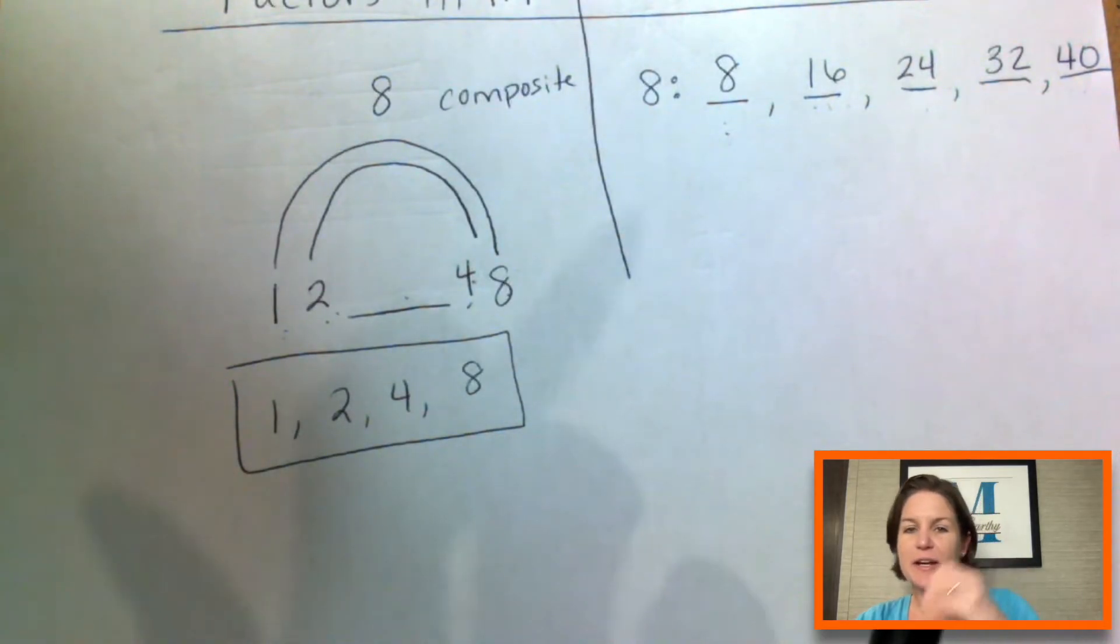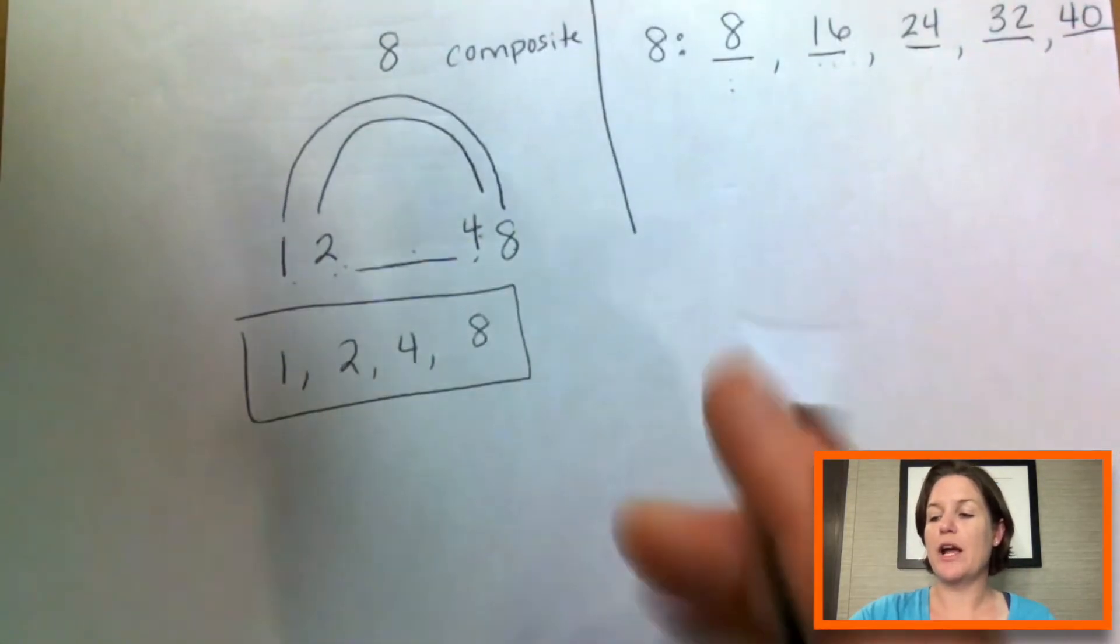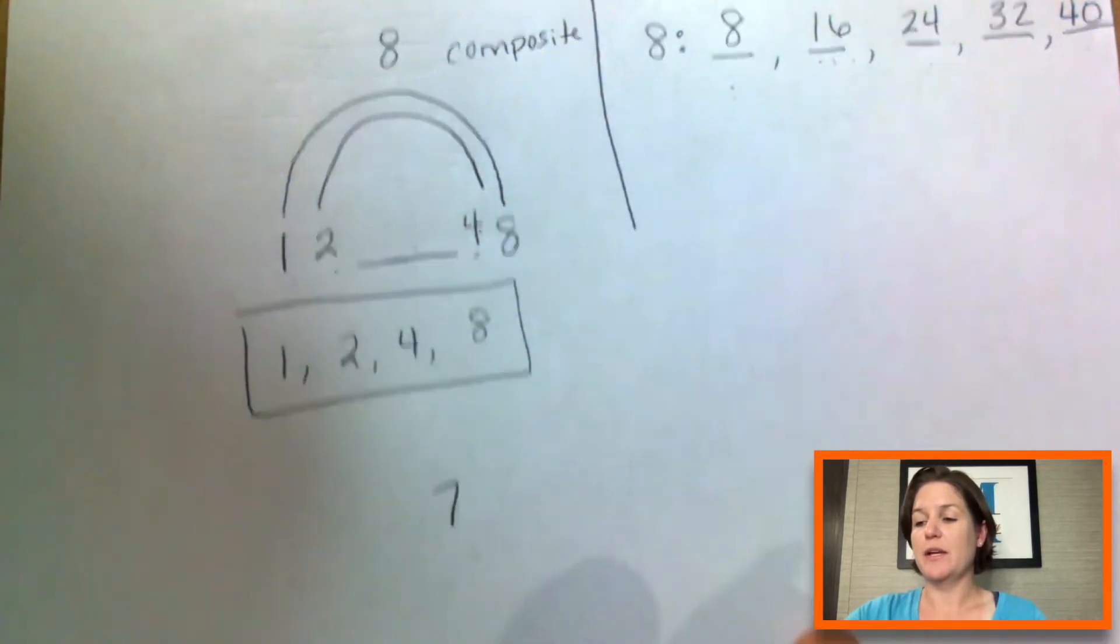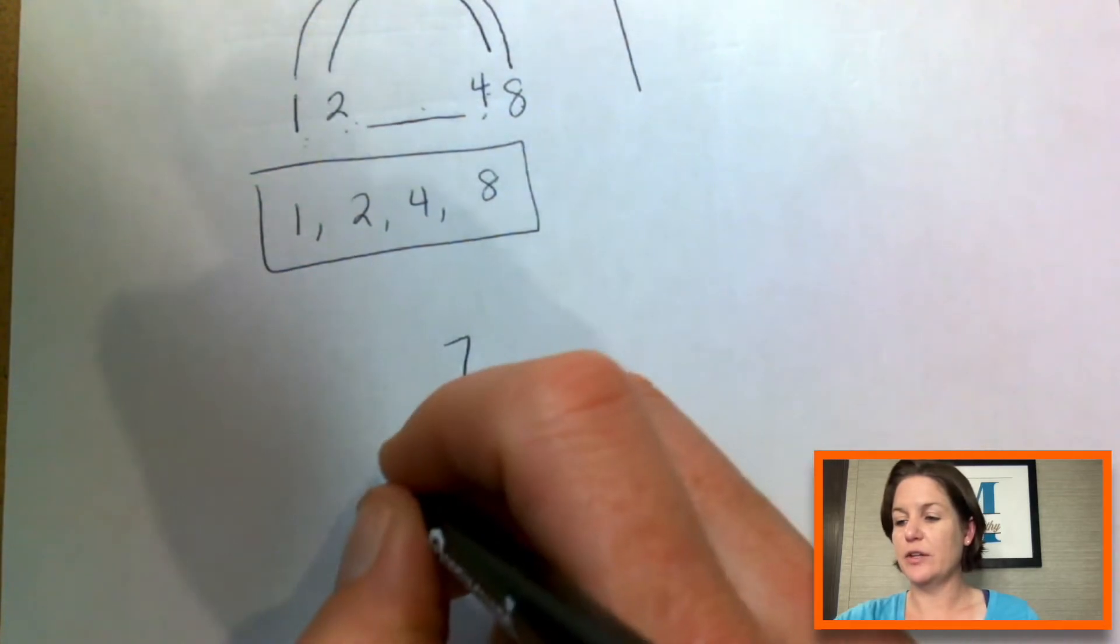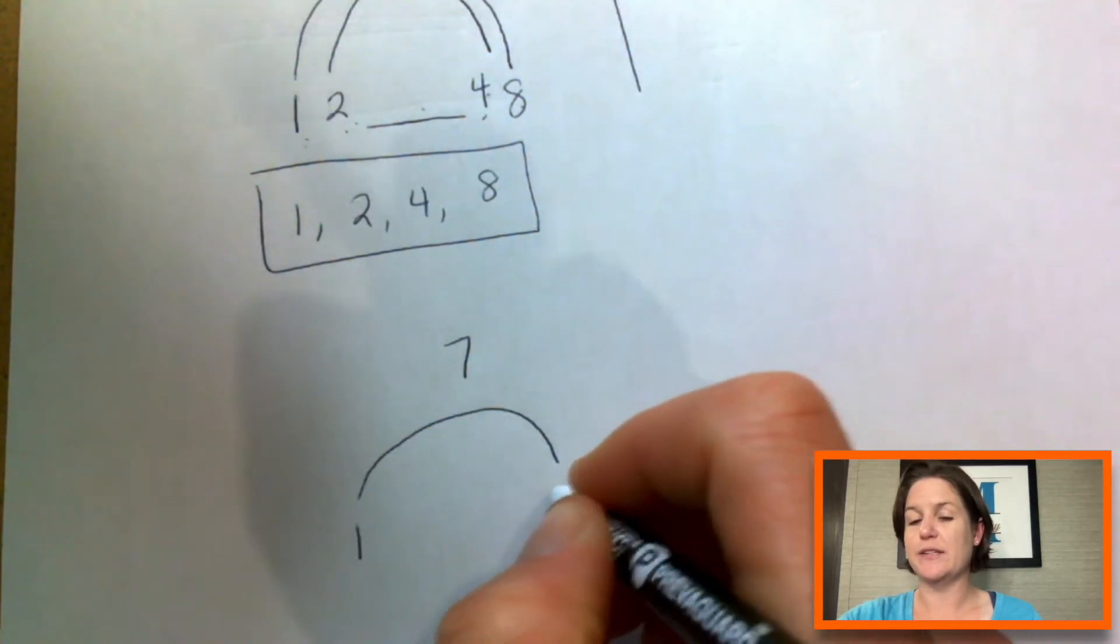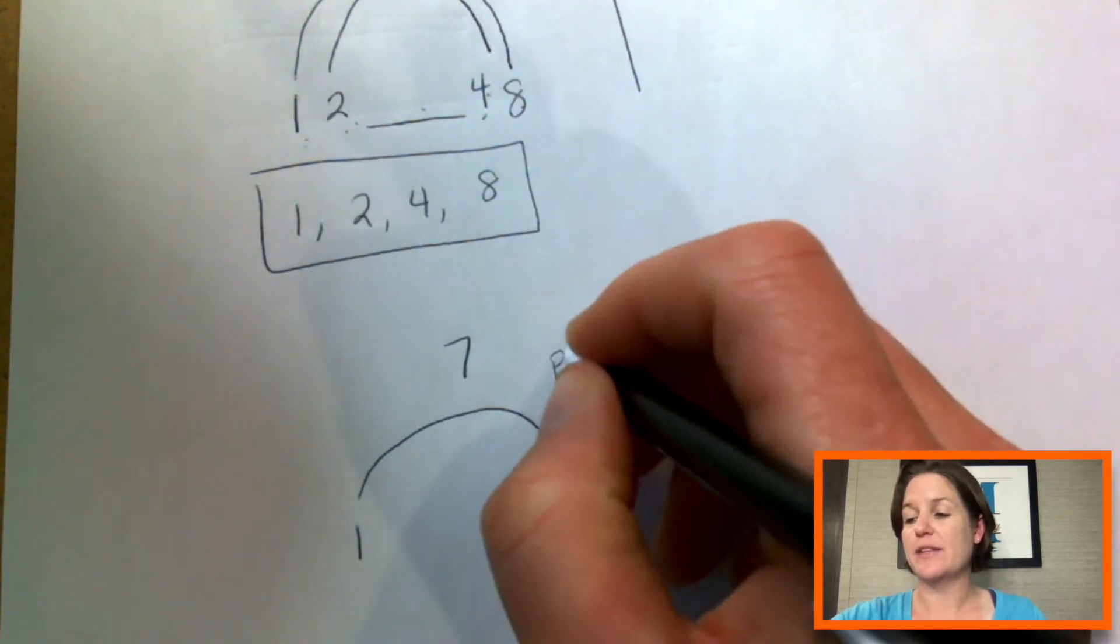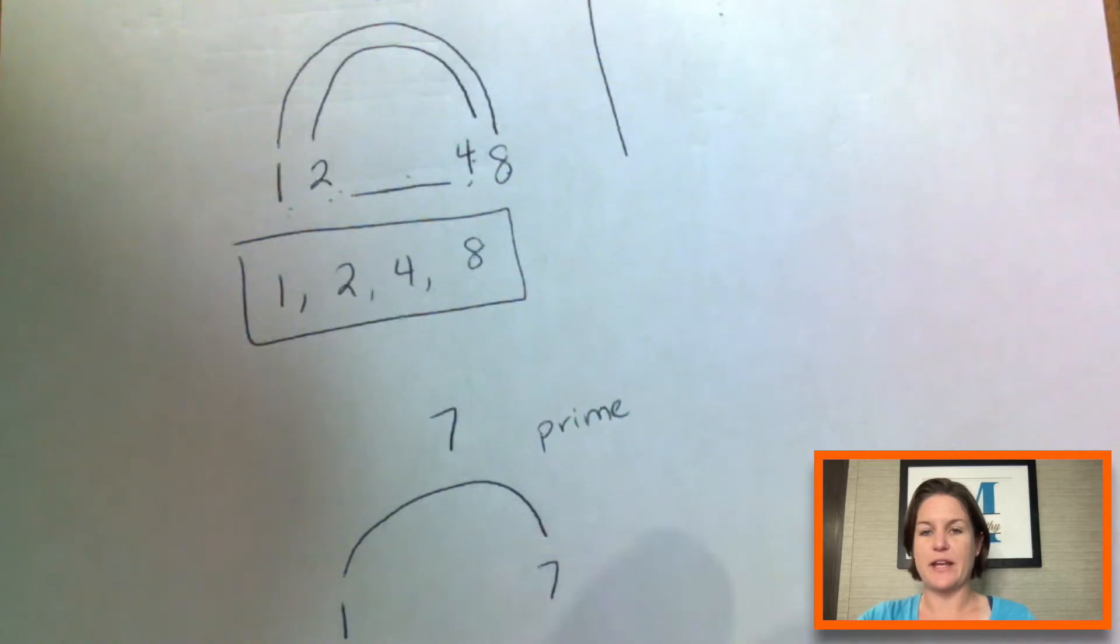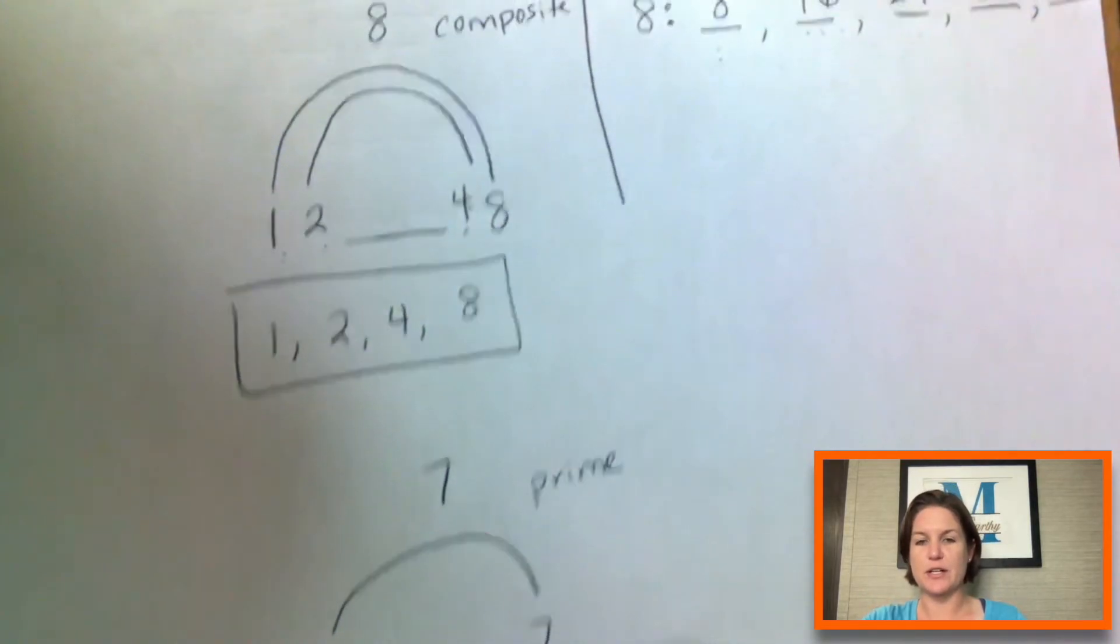If it's not a composite number, it means that it's prime. And an example of a prime number would be like the number seven because the seven only has the factors one and seven. You see how we only get one strand of the rainbow. It only has a factor of one and itself that makes it prime. Okay. So those are some things that they have to learn this year.